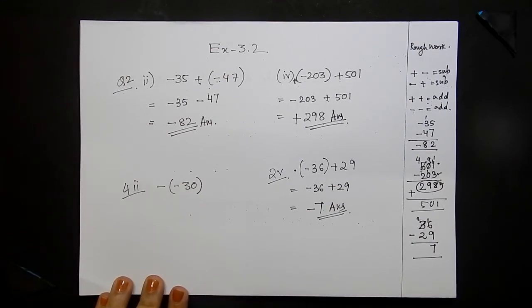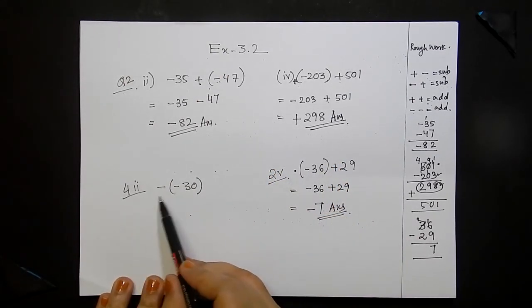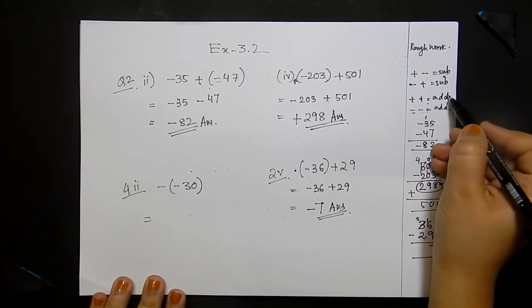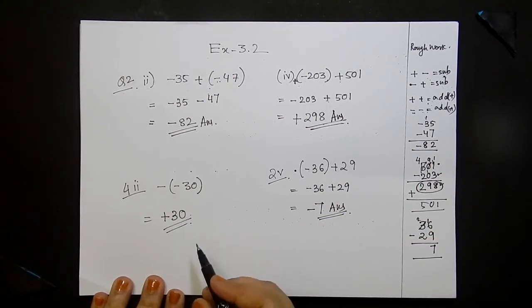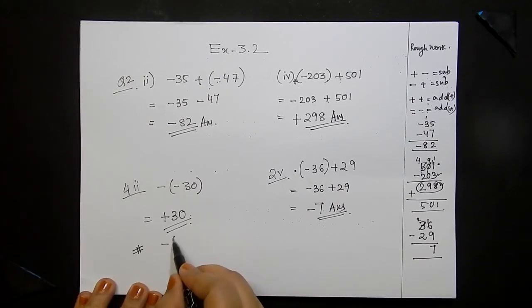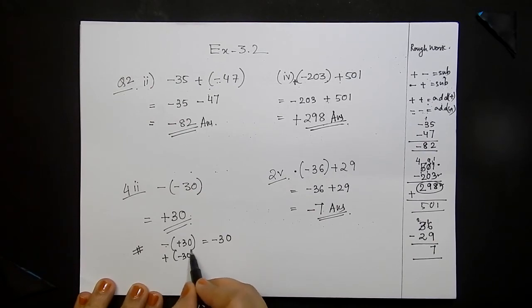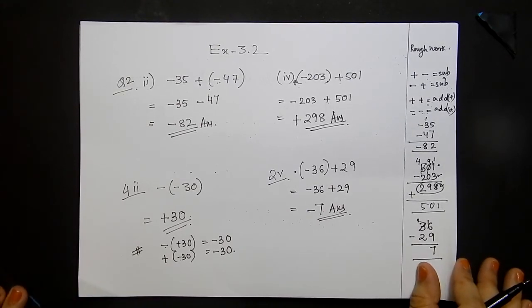Question 3 is similar — you can do it on your own. For sub-part 2: minus of (minus 30). Both signs are the same, so this equals plus 30. What is minus of (plus 30)? Two different signs, so it is minus 30. What is plus of (minus 30)? Two different signs, so it is minus 30. This concept will be needed over and over again.